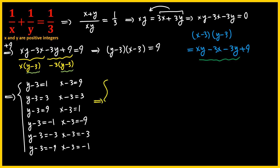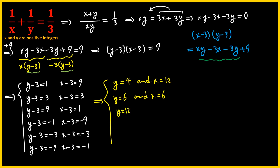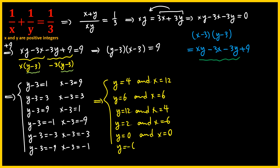Solving these gives: y = 4 and x = 12; y = 6 and x = 6; y = 12 and x = 4. The negative scenarios yield invalid solutions — y = 2 and x = −6, or y = 0 and x = 0, or y = −6 and x = 2. These are not valid because x and y must be positive integers and cannot equal zero since they appear in the denominator.